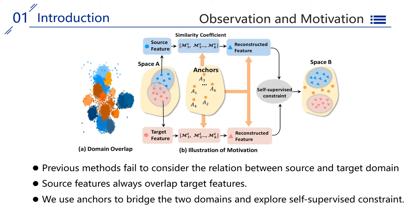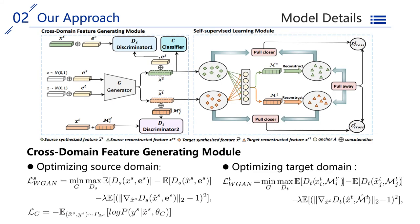Previous methods fail to consider the relation between source and target domain, and source features always overlap target features. We propose SDGN. It is composed of two modules.